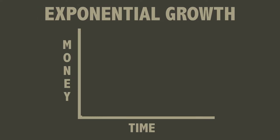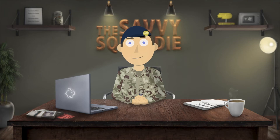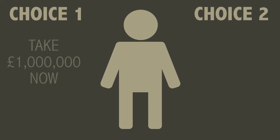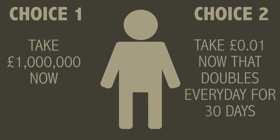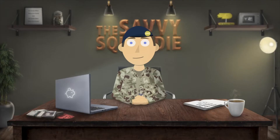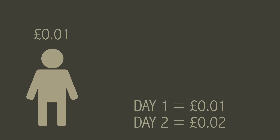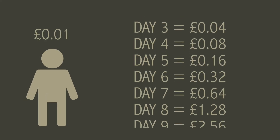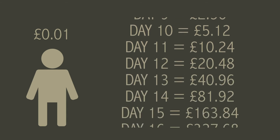Exponential growth is a pattern of data that shows greater increases with passing time, creating a curve. Compound interest creates exponential returns. For example, you have two choices: take an upfront payment of £1,000,000 now, or take 1p now that doubles every day for 30 days. Many people might take the £1,000,000 due to the instant gratification and the seemingly insignificant amount that 1p is. The fact is, if you took the 1p option, by day 10 you would only have £5.12 and by day 20 you would have just over £5,000.